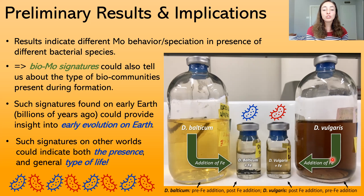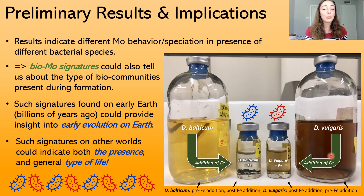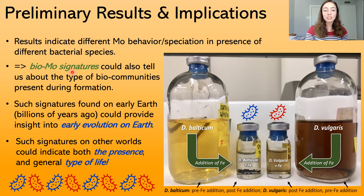I have some cool preliminary results regarding biology's effect on molybdenum. In the lab I've compared two different bacterial species' effect on molybdenum, and found that they form completely different molybdenum products — one forming iron-molybdenum sulfide precipitates, and one with no precipitates at all, keeping molybdenum dissolved in solution even in a highly sulfidic and anoxic environment. The striking thing is these bacteria are not that different from each other — they actually have the exact same metabolism, as sulfate-reducing bacteria. Because of these differential results, we might be able to use bio-molybdenum signatures to identify not only the presence of biology, but the type of biological communities present during a rock's formation.